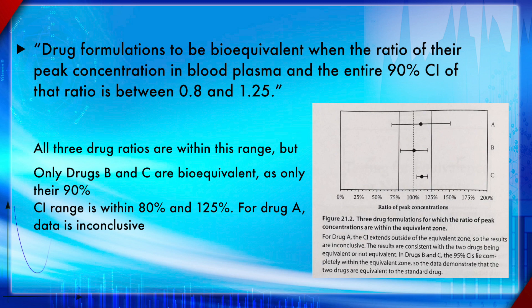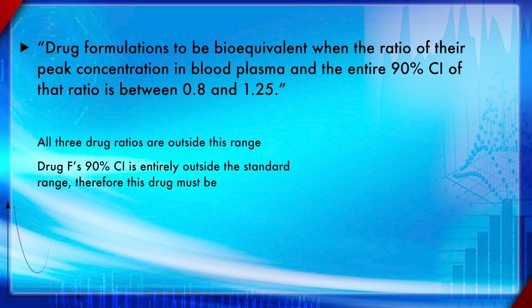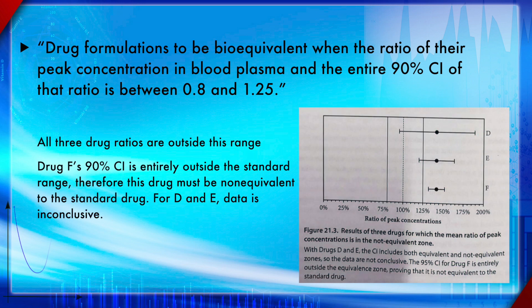In a t-test, if the 90% confidence interval includes the 100% null hypothesis line, the result is statistically non-significant; if it does not include it, it is significant. In this diagram, drug C is significant, as well as drugs E and F — but in reality, that conclusion is not valid at all for equivalence testing.